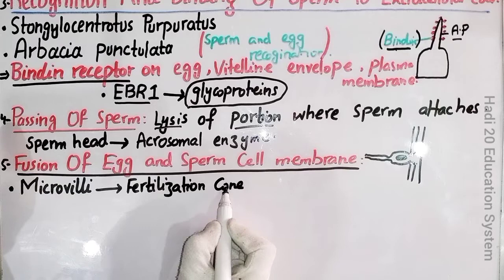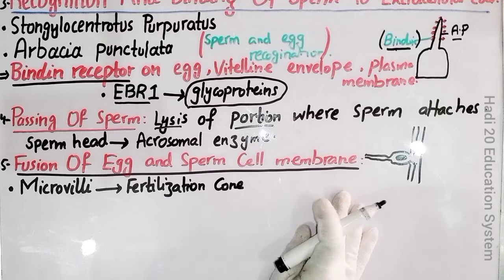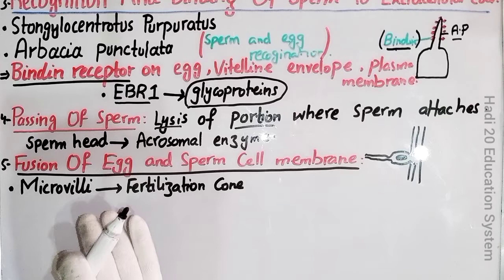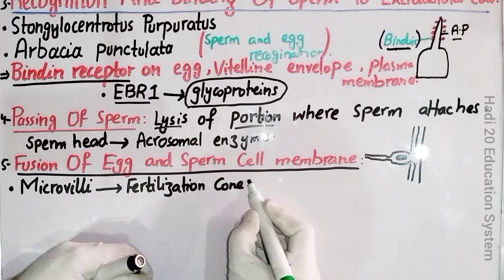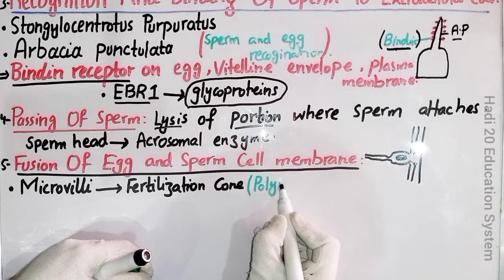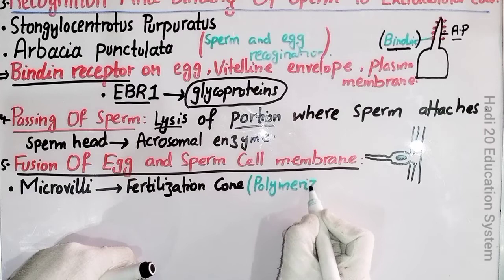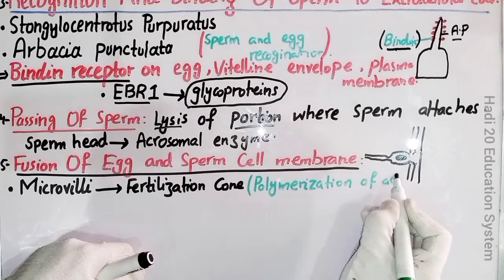تو کیا ہوا کہ sperm cell نے آ کے attach کیا، اس portion پر lysis ہوئی، تو sperm اور egg کی plasma membranes آپس میں مل گئیں۔ جب plasma membranes آپس میں ملیں تو وہاں پر بہت سارے microvilli بنے — microvilli نے fertilization cone بنا دی۔ Microvilli سے fertilization cone کیسے بنیں گی؟ آپ نے کہنا ہے کہ یہاں پر polymerization of actin کے نتیجے میں یہ سارا process ہوگا۔